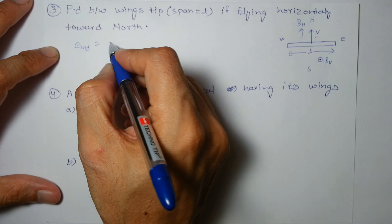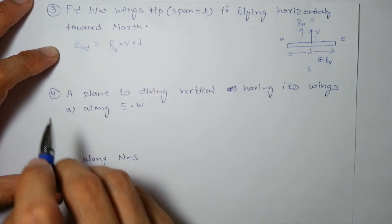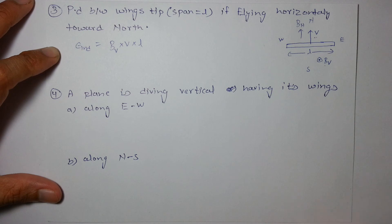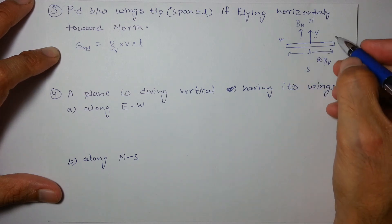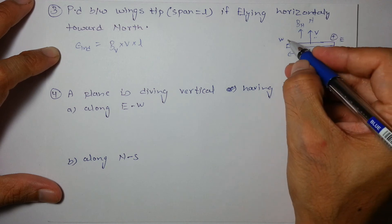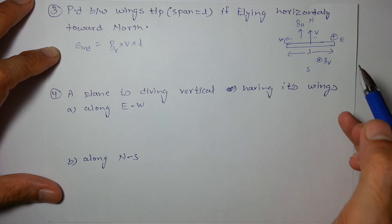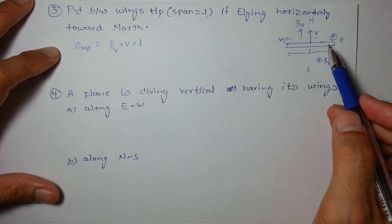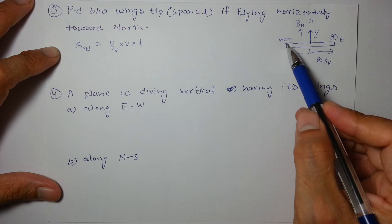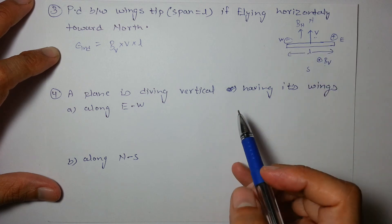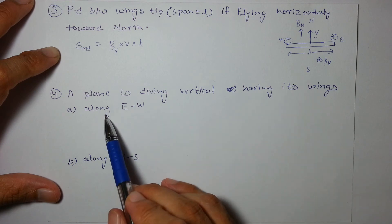The EMF induced equals BV × velocity × L. Using V cross B: V is northward and BV is upward (out of plane), so V cross B points eastward. Therefore the tip towards the east will be positively charged and will have higher potential.